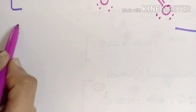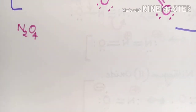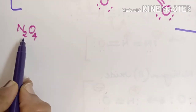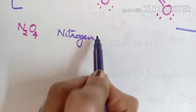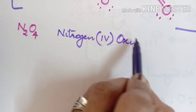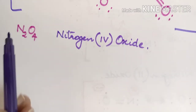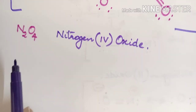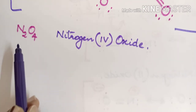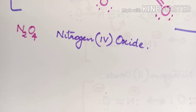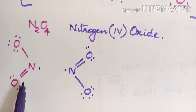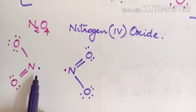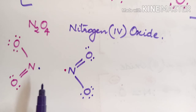The next molecule is N₂O₄, known as dinitrogen tetroxide or nitrogen(IV) oxide. This can be considered as a dimer of NO₂. To draw the structure of N₂O₄, we are going to draw two NO₂ molecules side by side.